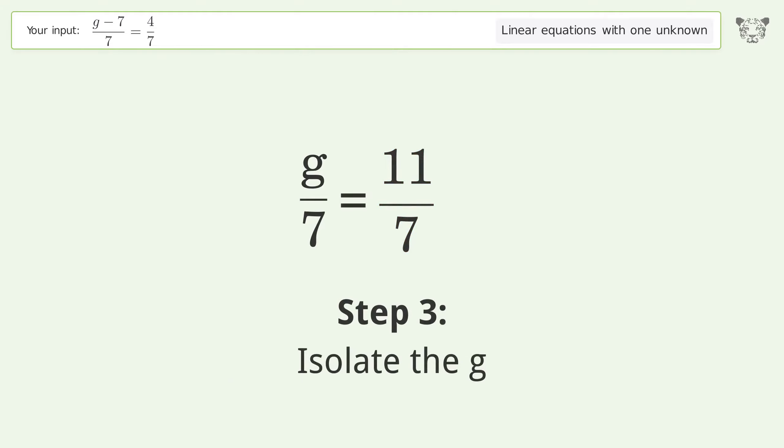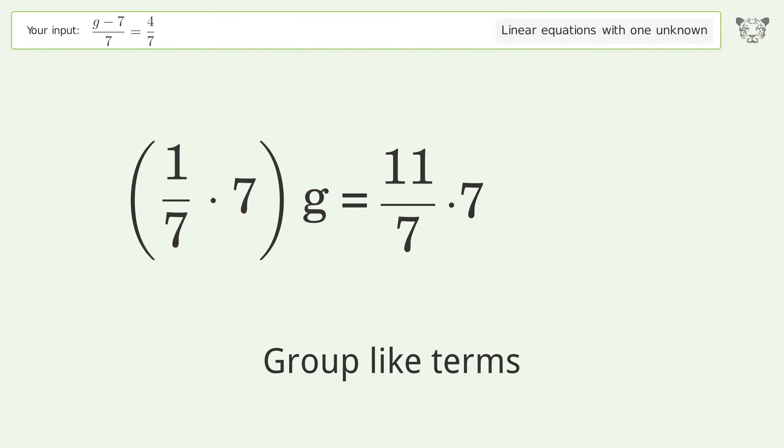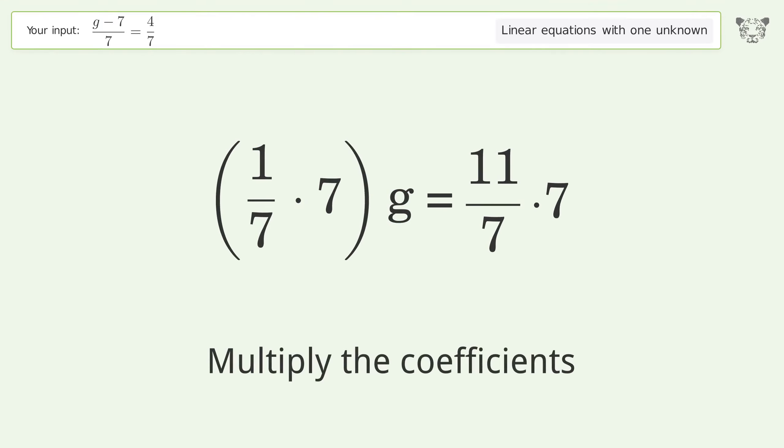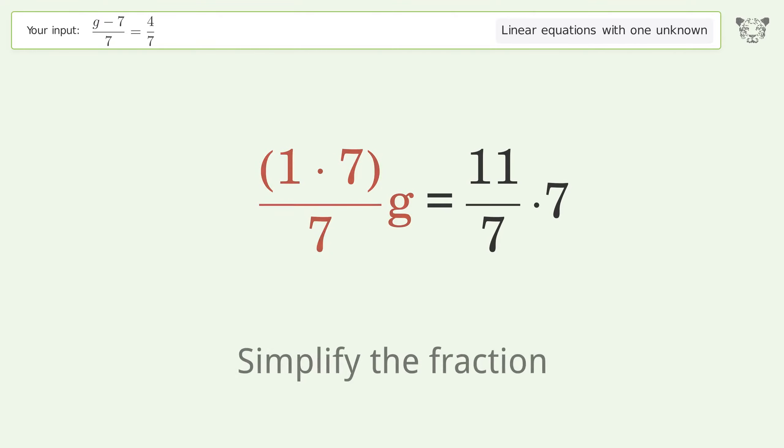Isolate the g. Multiply both sides by 7. Group like terms. Multiply the coefficients. Simplify the fraction.